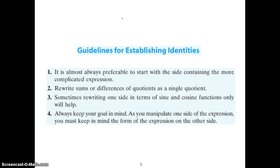Here are some guidelines for establishing identities. It can be overwhelming when you don't know where to start. Always start with the more complicated side, or you can cross multiply — I find that really helpful. Then break everything down in terms of sines and cosines, which is almost always useful. These problems can get intimidating, but it just takes practice. You'll get good at them.